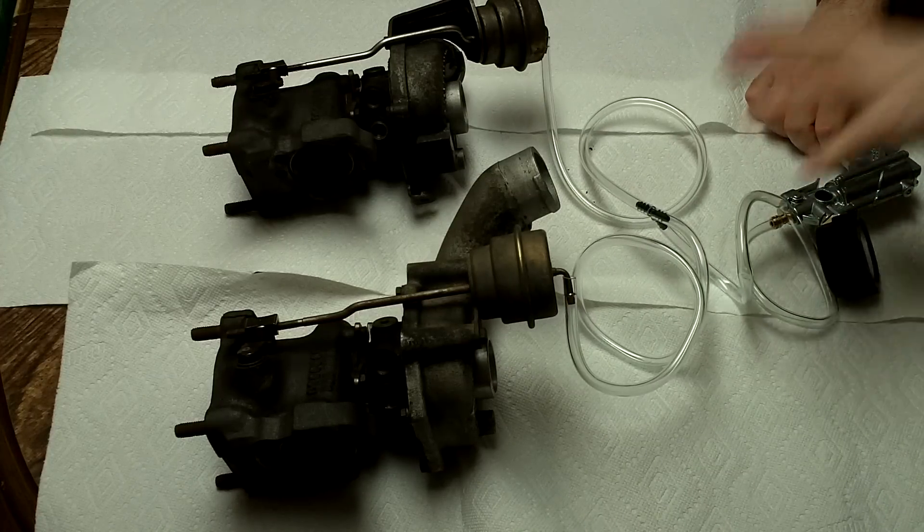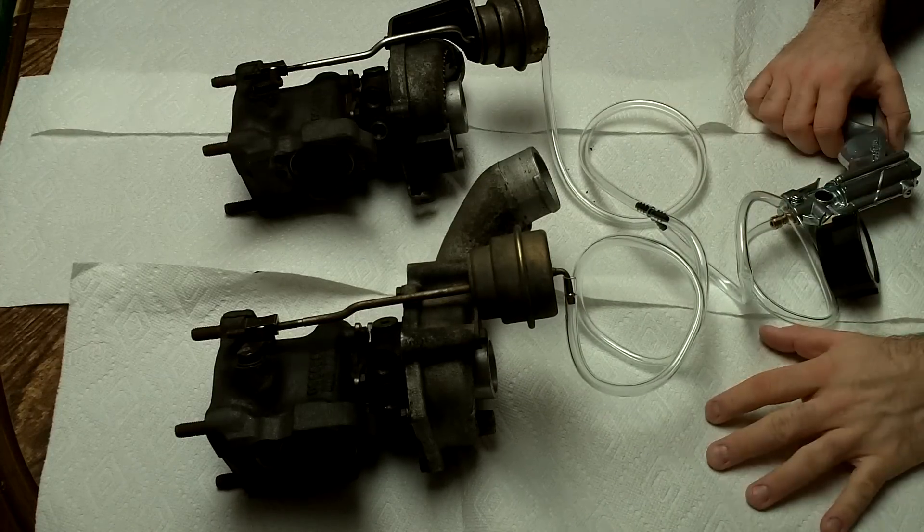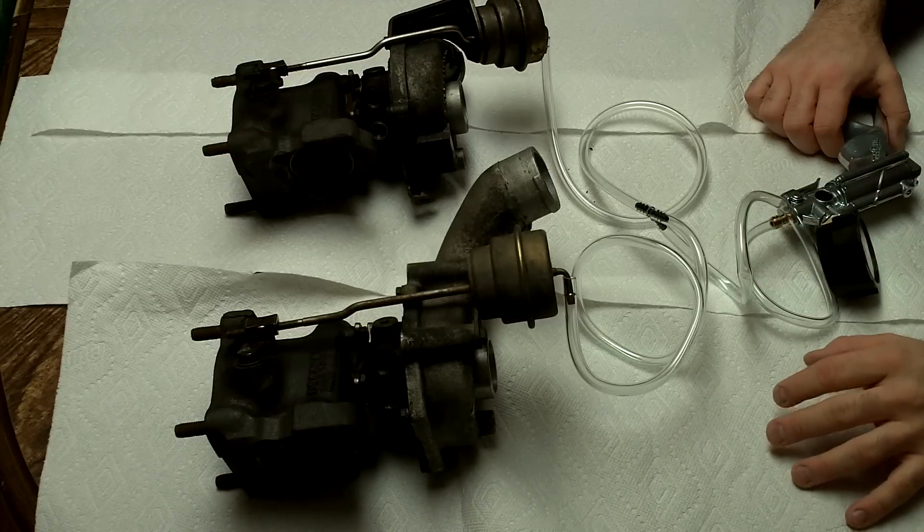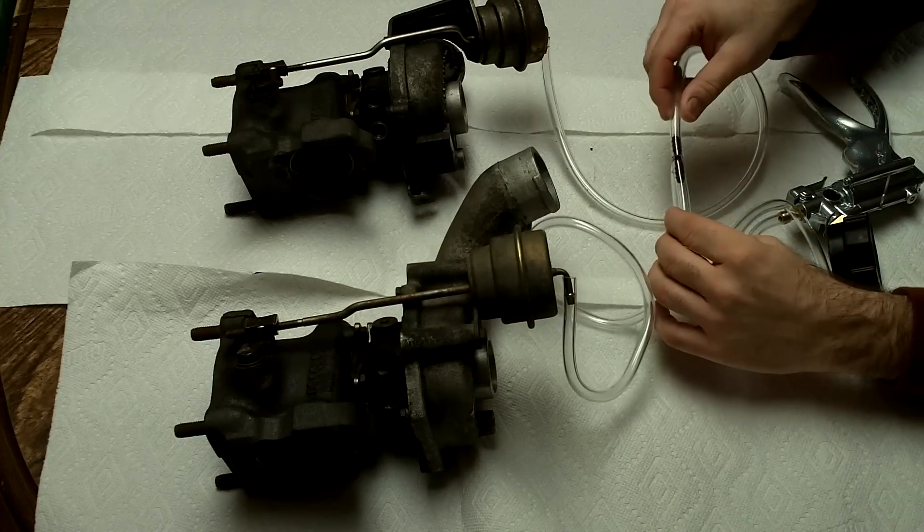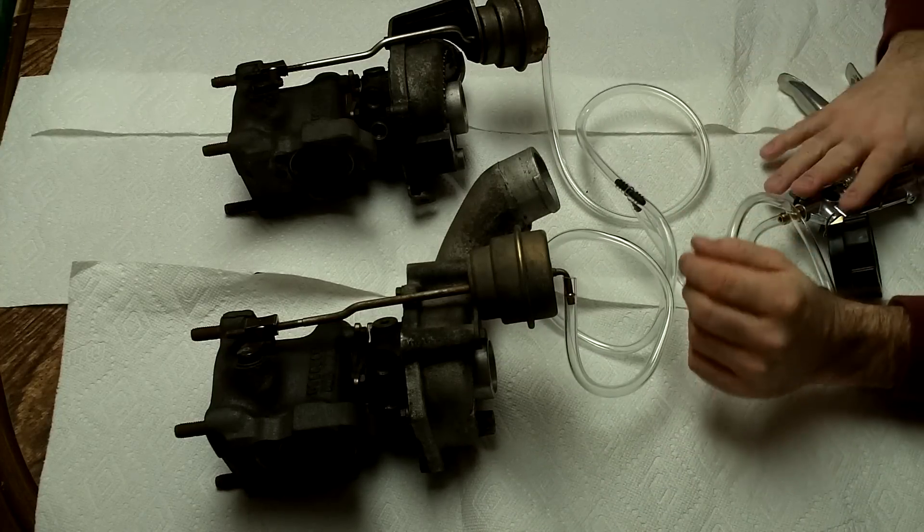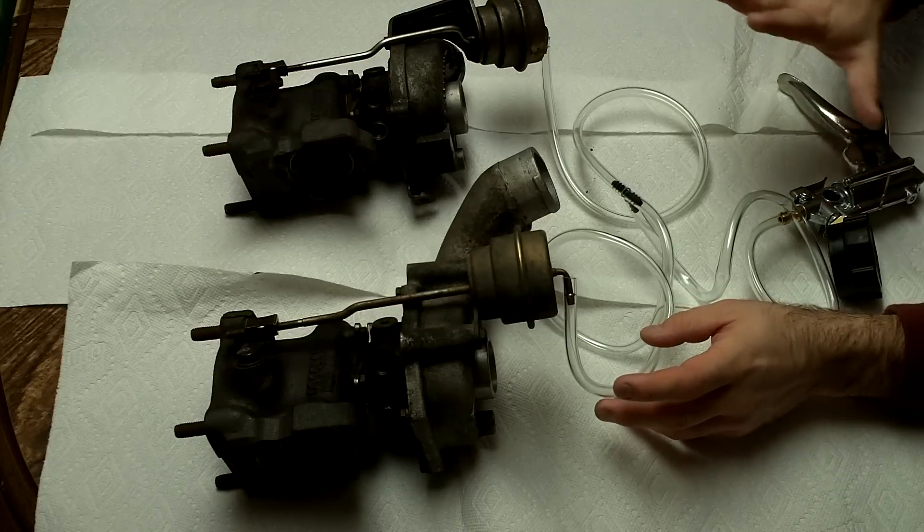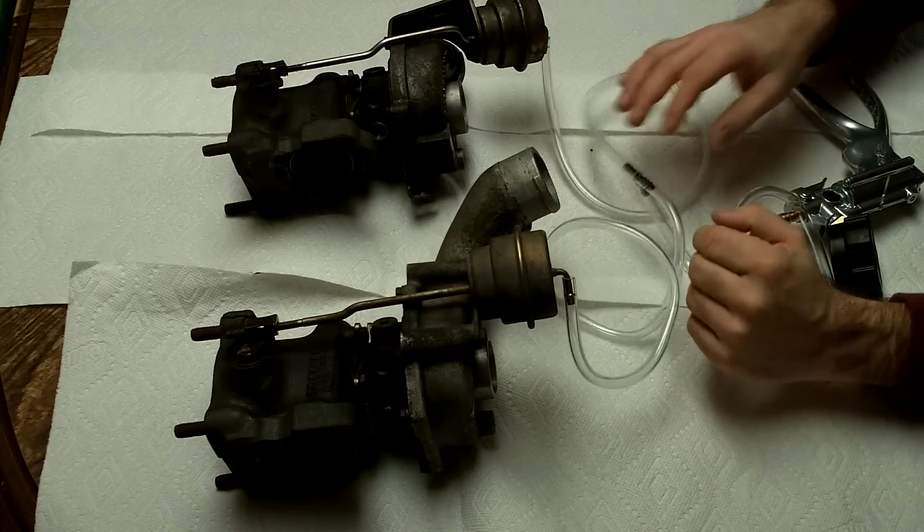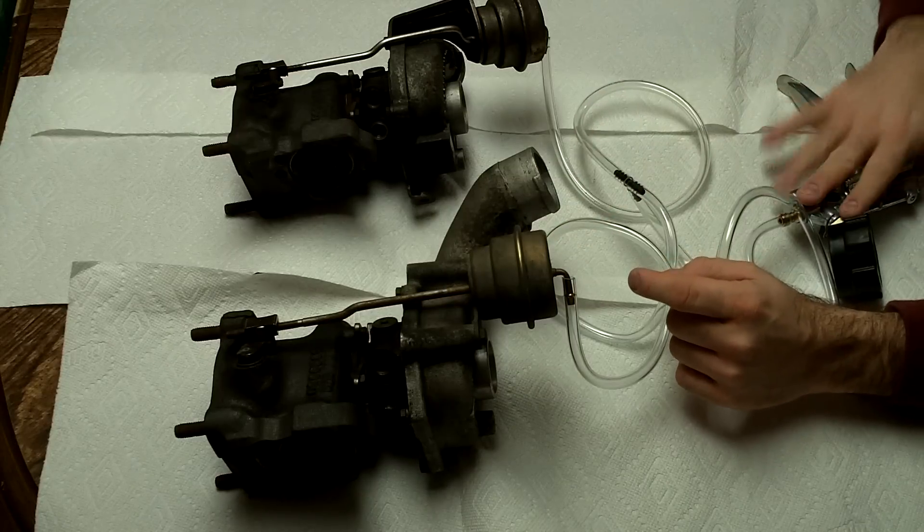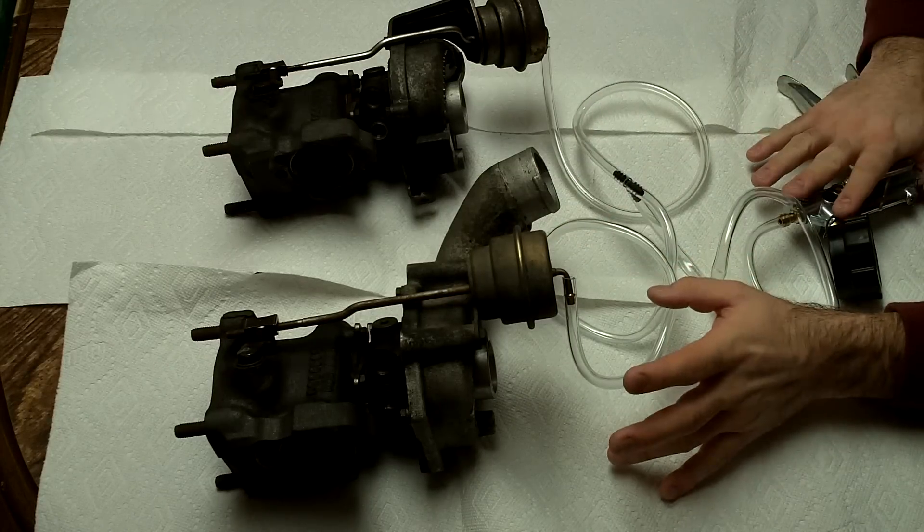As you can see here this is a twin turbo setup from an Audi. So we got basically vacuum lines running to a T and from that T it goes into the MV8510. Now if you don't have twin turbos you obviously don't need a T you can connect your one single waste gate directly to the MV8510.